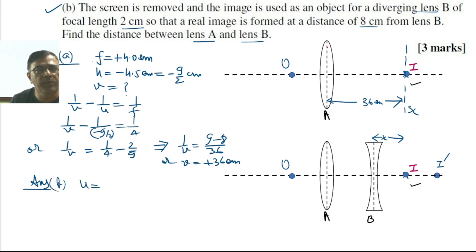Here U equals plus X, V equals plus 8 centimeters, and F equals minus 2 centimeters. Now substitute these values once again in the lens formula.